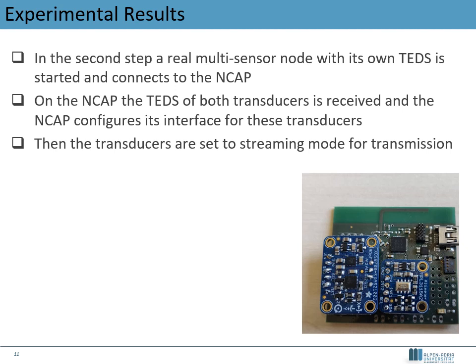The measurement setup starts with starting the NCAP system. In the first run, the transducer simulation boots up and connects to the NCAP. As the NCAP detects the transducer, the user requests the TEDs of the transducer simulation. Once the NCAP has parsed the received TEDs and configured its endpoint, the user initiates measurement mode, in which the transducer starts streaming measurements. In the second run, instead of the simulation, the real transducer is used for measurements.